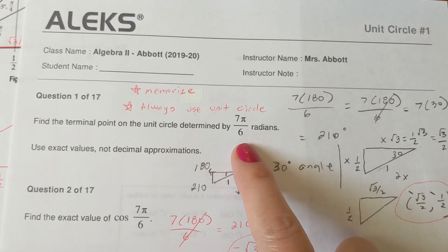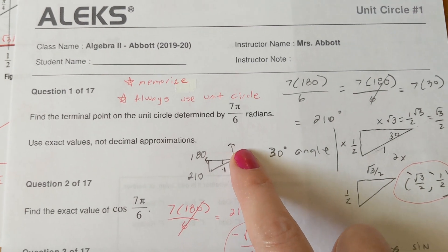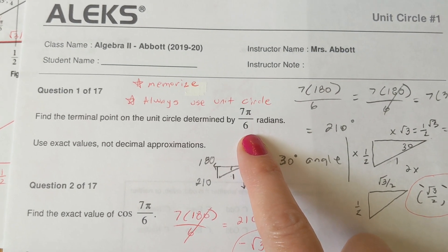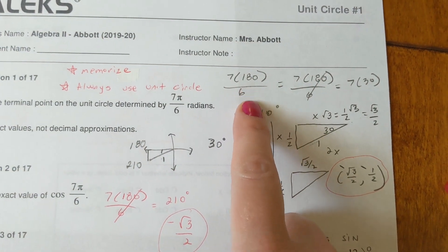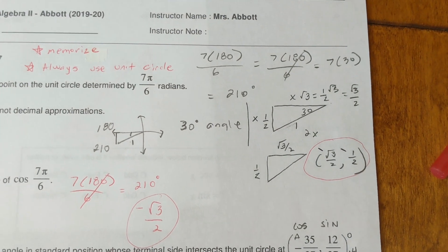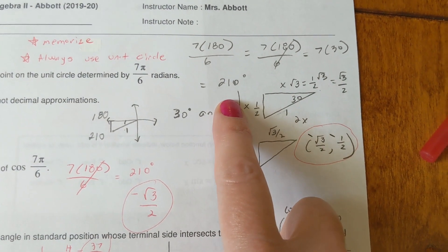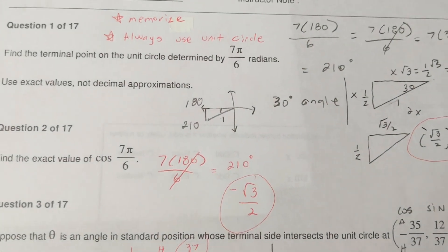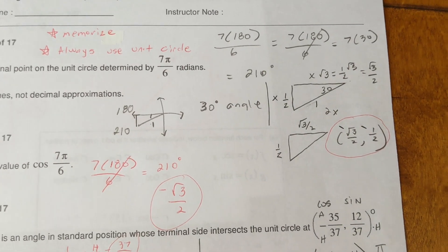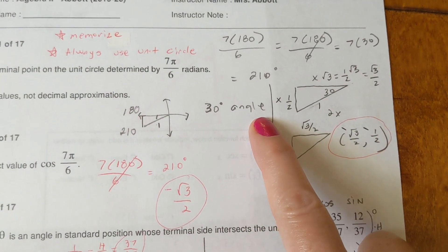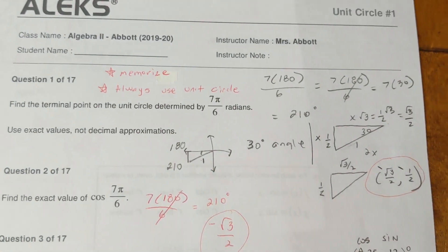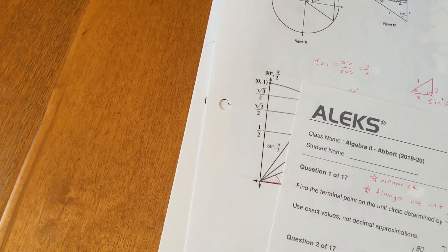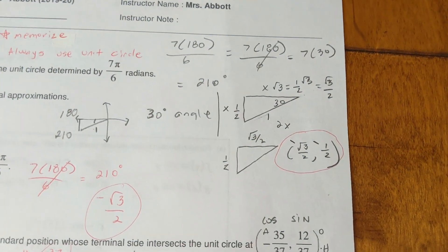So the first question here, number one on your homework, it wants you to find the terminal point on a unit circle determined by 7 pi over 6 radians. Anything with the number 6 on the bottom is probably going to be a 30-degree angle. And you can double-check it if you don't have it memorized. Put 180 in for pi. Clean it up. And you'll see here on number one that it makes it 210 degrees. So that is 30 degrees away from 180, a 30-degree angle. It's a 30-degree angle. And they wanted to know the exact point. If you memorize your unit circle, 210 degrees is down here. Negative radical 3 over 2, negative 1 half.